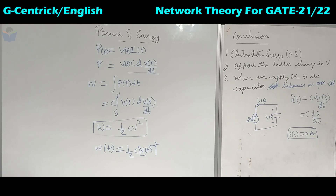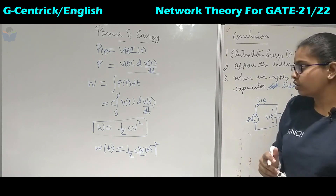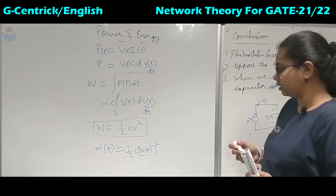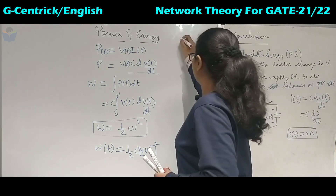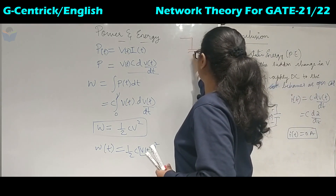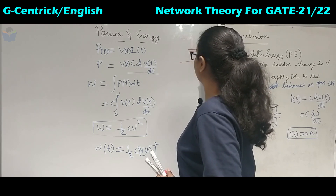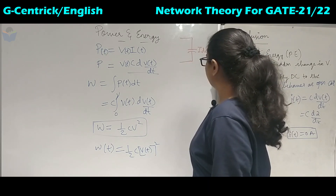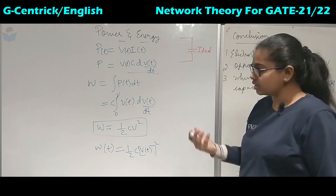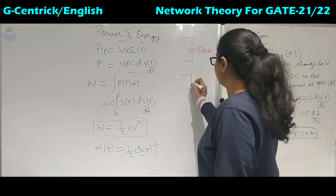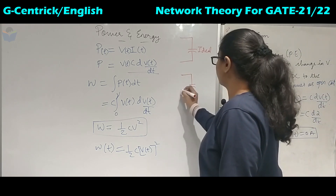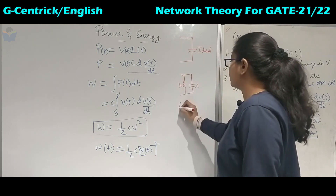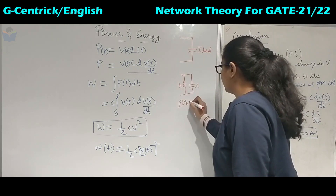The symbolic representation of a capacitor: ideally we represent it as two parallel plates. However, ideal capacitors do not exist. In the practical representation, there will be some resistance R included in the circuit.